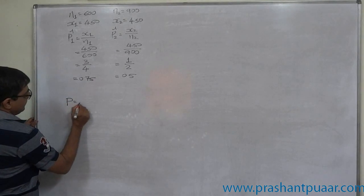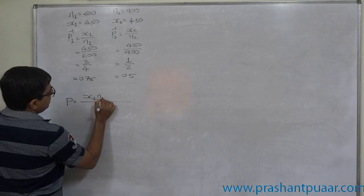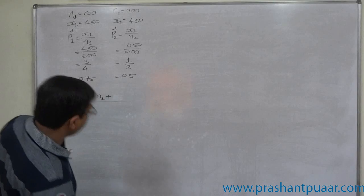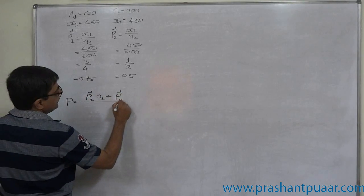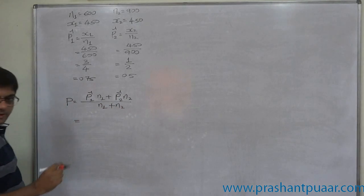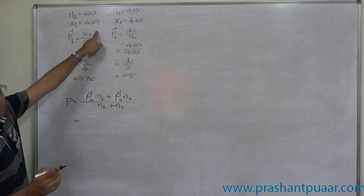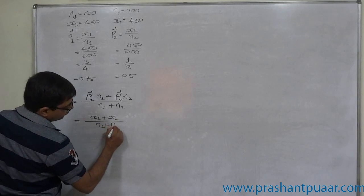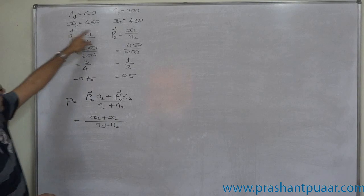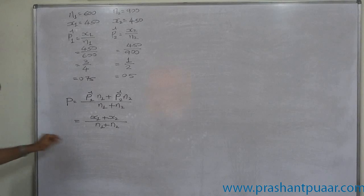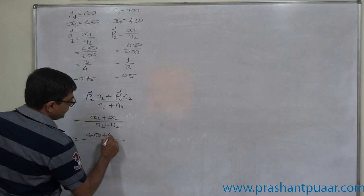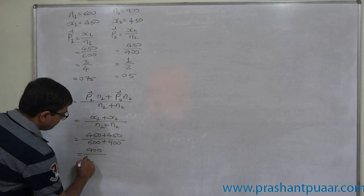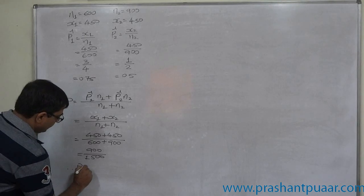So we have to calculate a representative capital P through this formula: p1 into n1 plus p2 into n2 divided by n1 plus n2. But this simplified formula we know that p1 into n1 is nothing but x1 and p2 into n2 is x2, so we can use directly x1 plus x2 divided by n1 plus n2. I personally suggest use of this formula if x1 and x2 are available from the data because this will give us more accurate value of capital P. 450 plus 450 divided by 600 plus 900, so ultimately it is 900 divided by 1500, so capital P comes to 0.6.